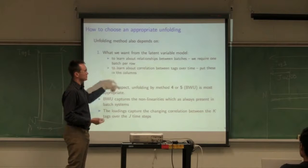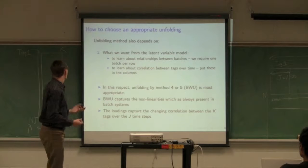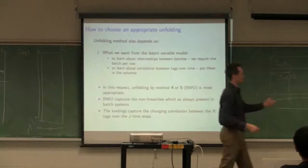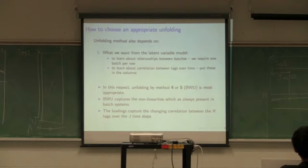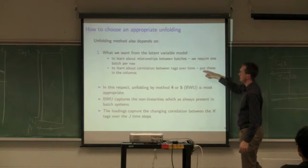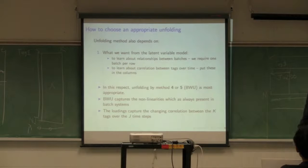So when we say what we want to get from the model, we want to see the correlation between tags over time. The other unfolding assumes correlations are constant for the entire duration, which we know not to be true. The other thing we want is to see batches projected in a much lower dimensional space. With observation-wise unfolding, the scores are time-based trajectories. Here you've gone from trajectories down to just a two-dimensional score space.